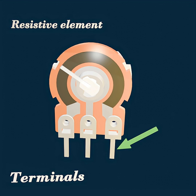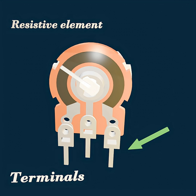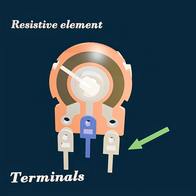Terminals. A potentiometer has three terminals: two outer terminals connected to the ends of the resistive element, providing fixed resistance, and a middle wiper terminal that offers an adjustable output based on the wiper's position.